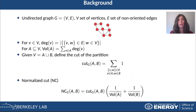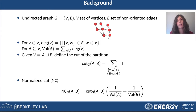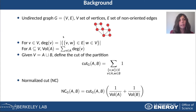First, I would like to give some background definitions. An undirected graph is constituted by a set of vertices and a set of non-oriented edges. One can think of a graph as some dots connected by edges. Often I will also call the vertices nodes. For a vertex, its degree is defined as the number of edges that are connected to it.